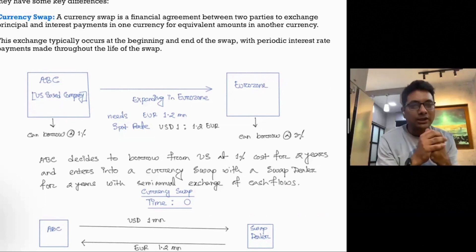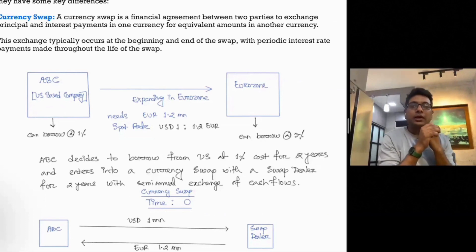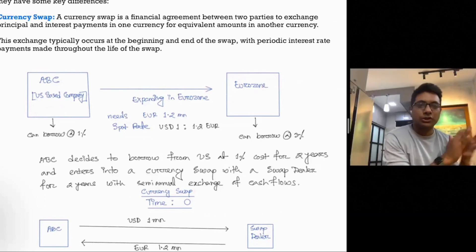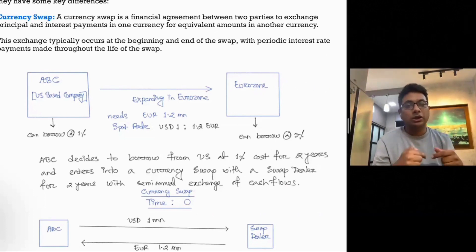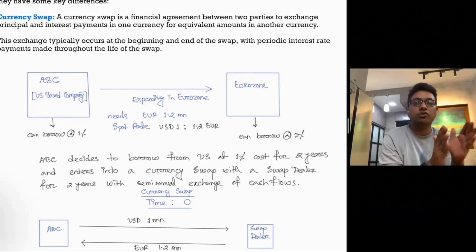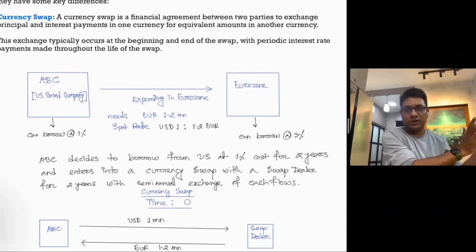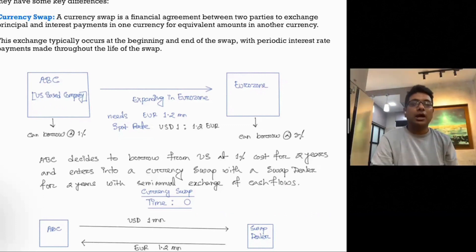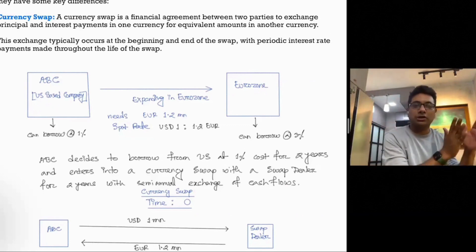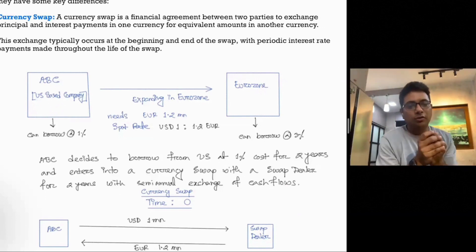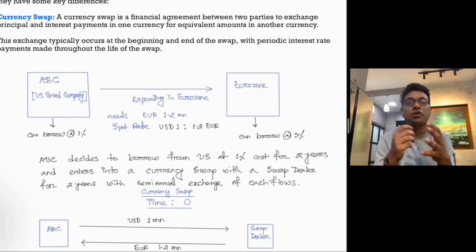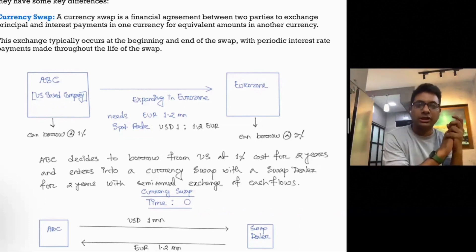For example, consider ABC, a US-based company that has expanded into the eurozone and needs 1.2 million euros. The current spot rate is 1 USD to 1.2 euros. ABC can borrow at a better rate in the US market at 1% cost, whereas borrowing in the eurozone would cost 3%.